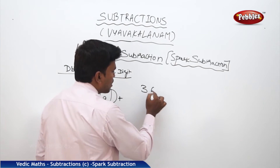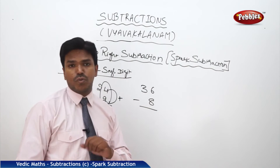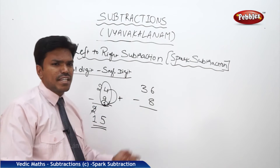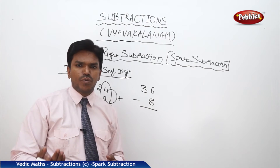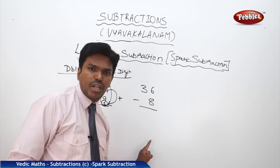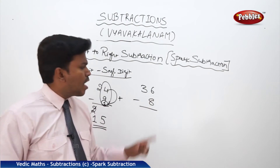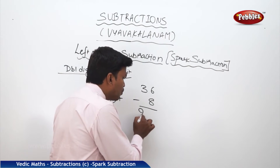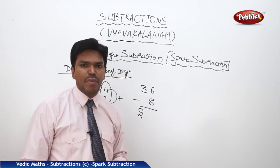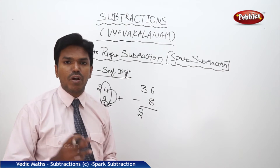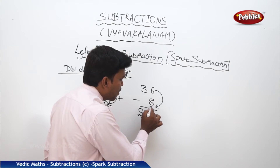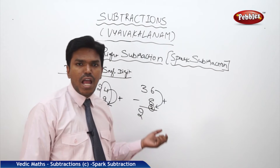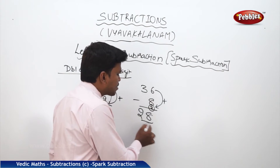One more example: 36 minus 8. Before dropping 3, check whether the next numbers are match or mismatch. They are mismatch. So 3 becomes 2. Since they are mismatch, we cannot do direct subtraction. Bring the above number 6 and add to the below number's complement. Complement of 8 is 2. So 6 plus 2 equals 8. The answer is 28.